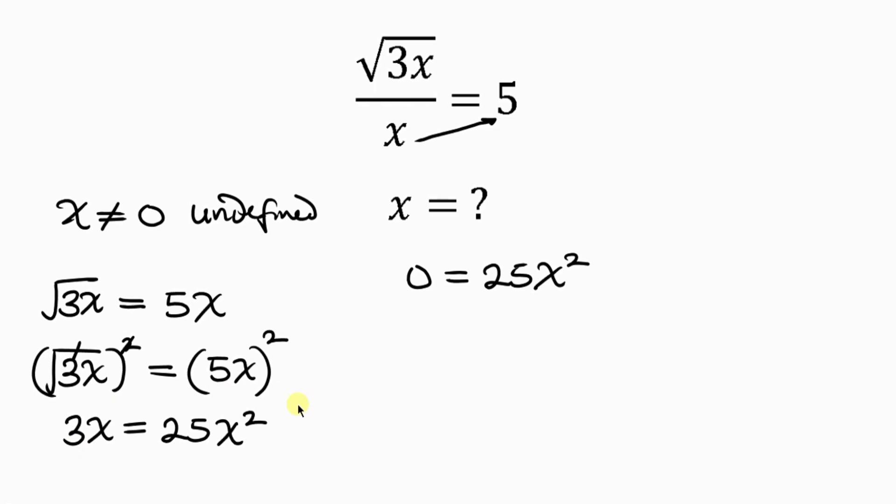This expression can also be written as 25x squared minus 3x equals 0. Now, notice that x is common, so we can factor out x, open bracket: 25x squared divided by x gives 25x, minus 3x divided by x gives 3.